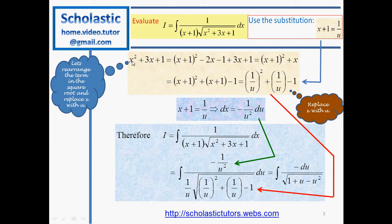We write x squared as (x+1) squared, which expands to x squared plus 2x plus 1. So we must subtract 2x and 1. When we add all these we get x squared, and we still have 3x plus 1. Simplifying: (x+1) squared minus 2x plus 3x gives plus x, and the 1 minus 1 plus 1 becomes 0. So now we have the expression (x+1) squared plus x.